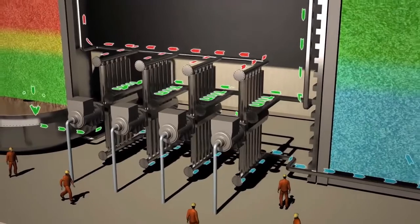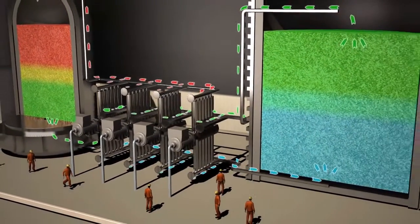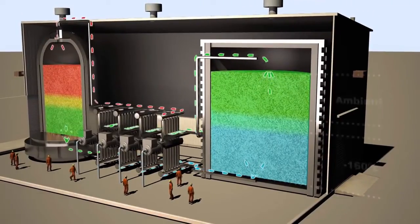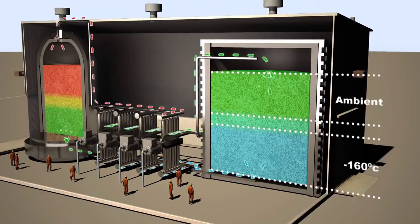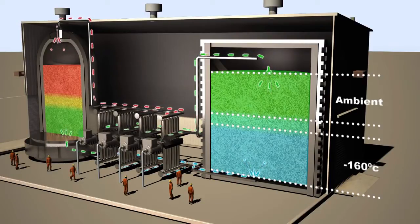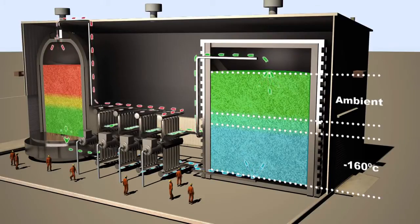It permeates the gravel storage medium, this time simultaneously warming the gas and cooling the medium. The lower zone is at minus 160 degrees, and the upper zone is at ambient temperature. In between is a cold thermal front, which gradually moves upwards during the charging cycle.